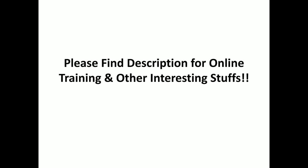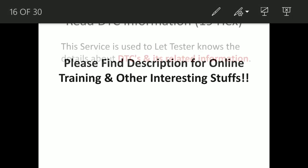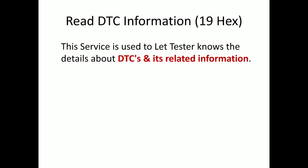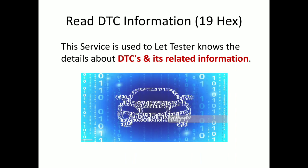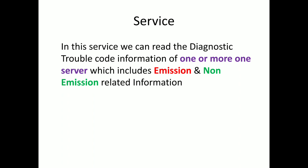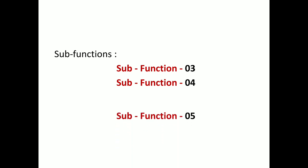This is our Read DTC Information tutorial part two. In the previous part we discussed five sub-functions, and in this tutorial we are going to see three sub-functions. Before going to the service, we'll look at the introduction of Read DTC Information. This service lets testers know the details about DTC and its related information. We can read the diagnostic trouble code information of one or more ECUs, covering emission as well as non-emission related information.